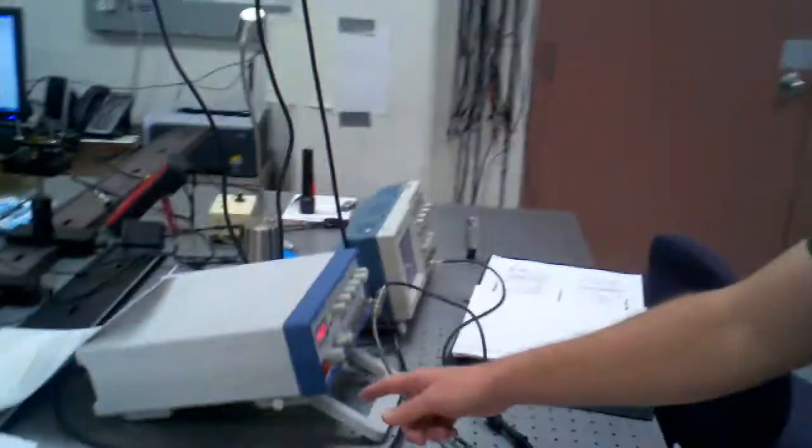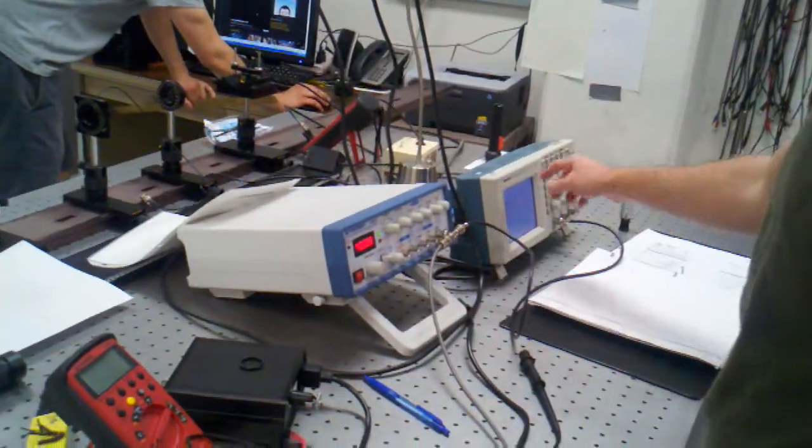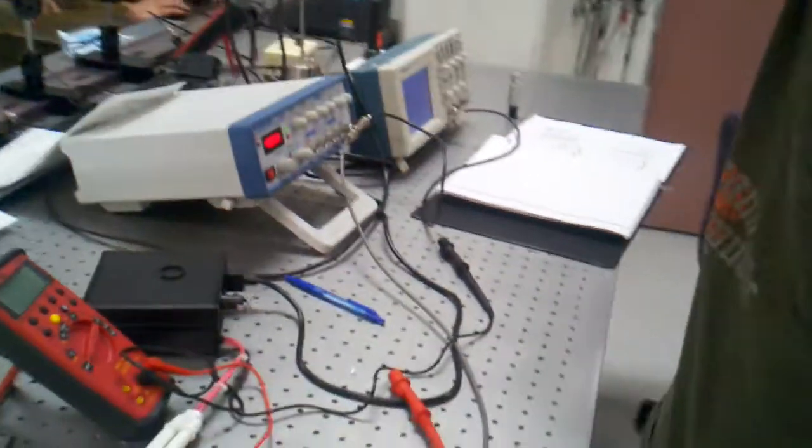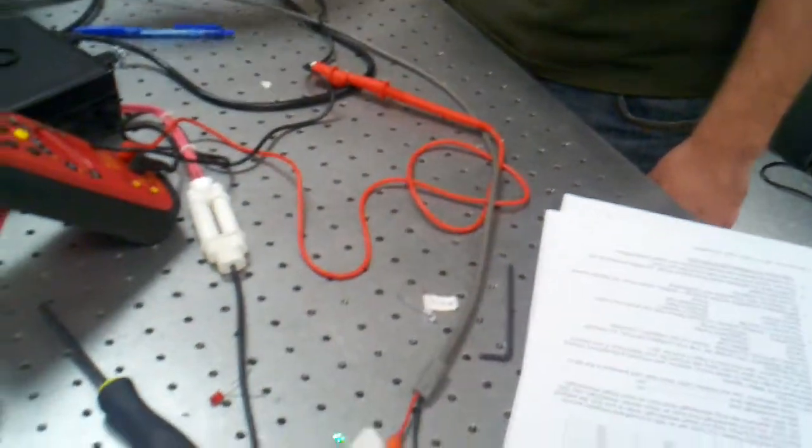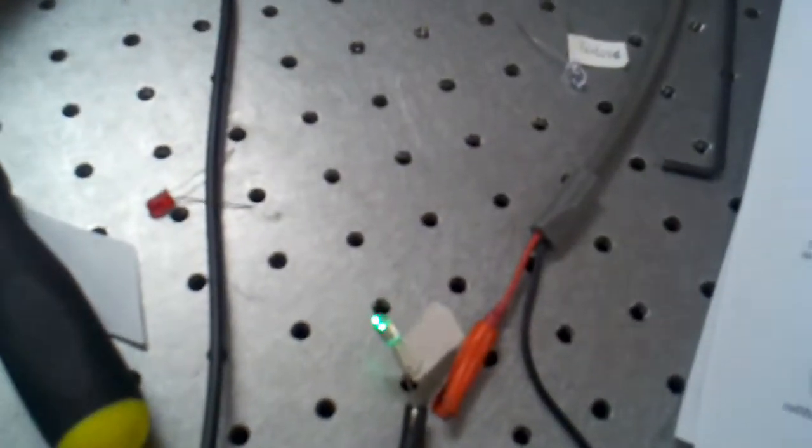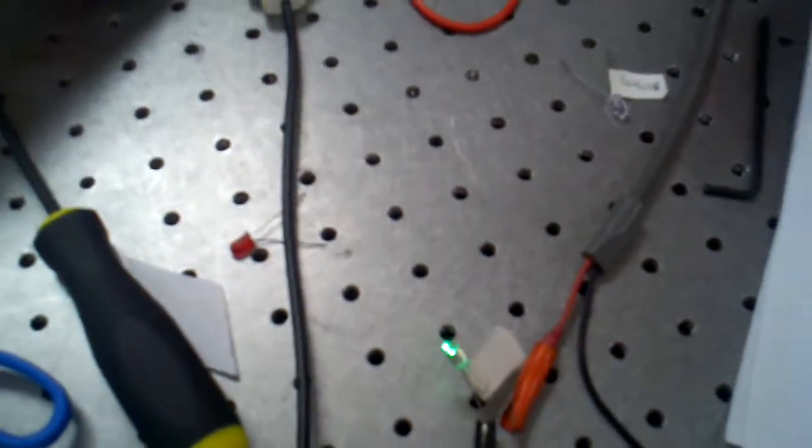In the next part of the lab, we measured the critical flicker frequency of an LED. We hooked an LED up to a function generator and looked at the amplitude and frequency of the signal using an oscilloscope. We used a red LED and changed the frequency between 25 and 75 hertz, and we found that around 33 hertz, we could no longer see the difference between on and off. It just looked like a constant on signal.